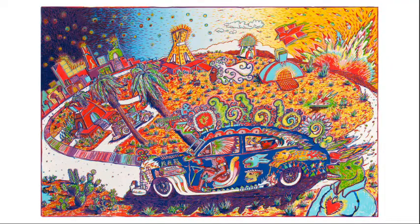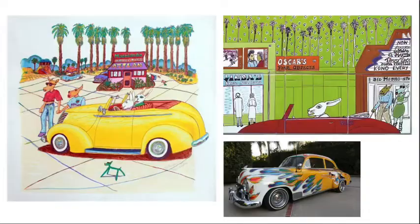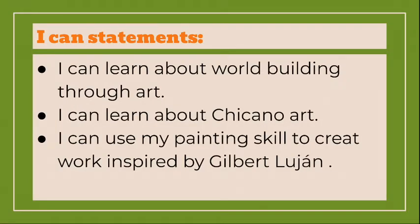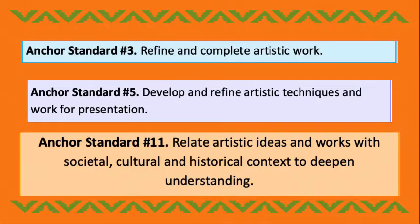Look at these for a long time — you can stop and look at them because the Tyler one is the one we're taking a lot of inspiration from. Our ICAN statements for today are: I can learn about world building through art, I can learn about Chicano art, and I can use my painting skills to create work inspired by Gilbert Lujan. The standards we're hitting today are 3, 5, and 11.